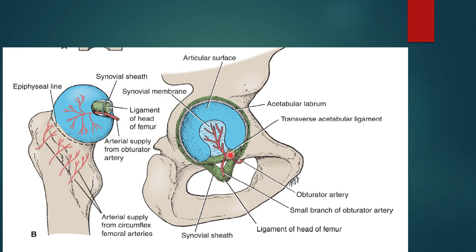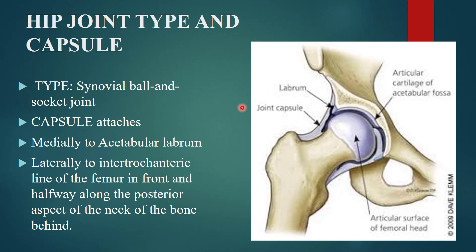The ligament of the head of the femur is attached at one end to the transverse acetabular ligament and at its apex to the fovea capitis of the femoral head. This is a synovial ball and socket joint. Now I will describe the attachment of the joint capsule.